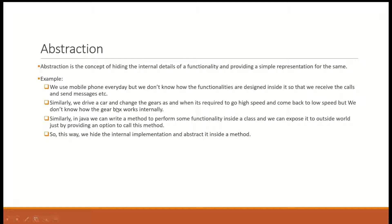Same thing in Java. We write methods to perform some functionality inside a class. We can expose it to the outside world by providing just the name of the function and what it is going to do — that is it. How the function is going to perform the functionality is hidden. We hide the internal implementation of the method — that is abstraction inside a method. That is the idea of abstraction.